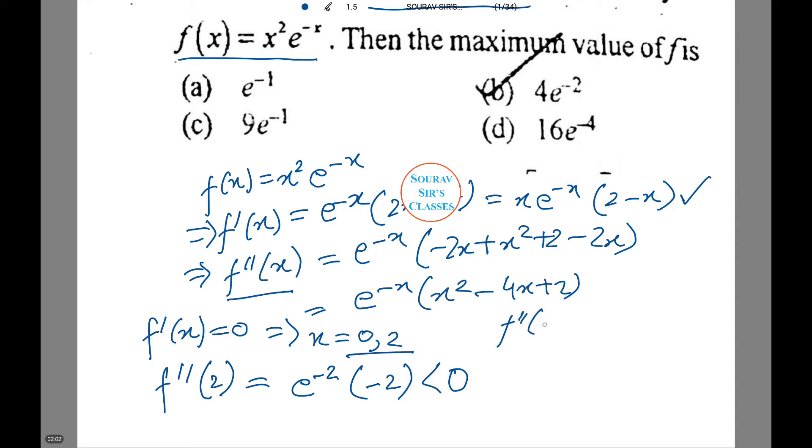Also we can check f double dash 0 equals e to power minus 0 into 2, which is greater than 0. Notice we need to find the maximum value of f.